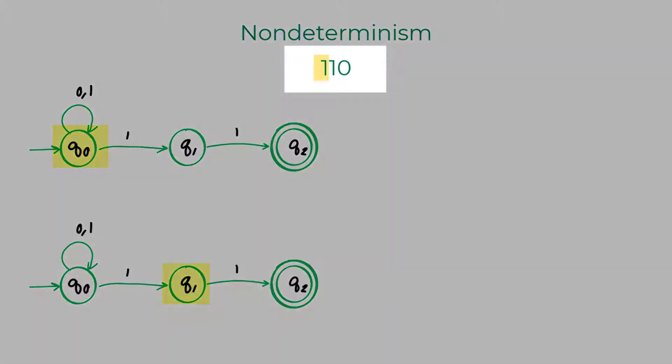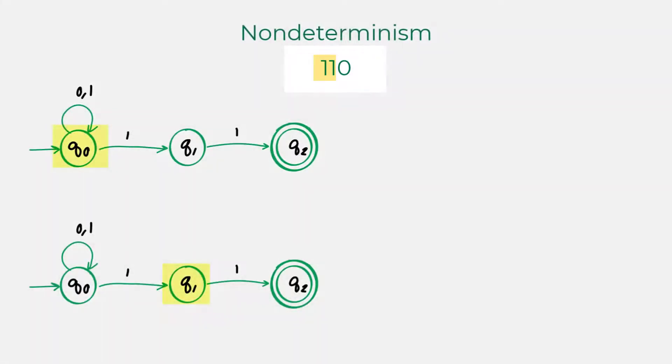Moving on to the next character, which is 1, the first machine is going to create another copy of itself. The second machine is going to Q2, which is marked as an accept state. You have to remember that the automaton has to read the entire input string before accepting the string.